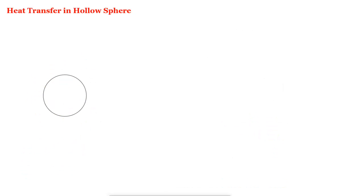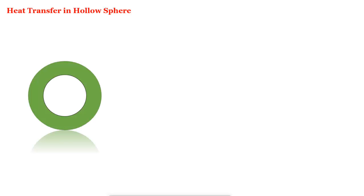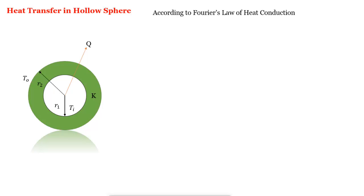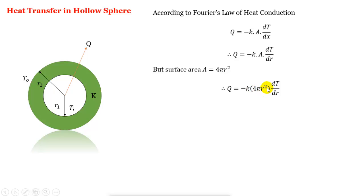Now we study heat transfer in the hollow sphere. The hollow sphere and hollow cylinder differ only in the area; all other derivation steps remain the same. Consider this is the hollow sphere having internal radius R1 at temperature Ti and outer radius R2 having temperature To. It has thermal conductivity K and Q is the heat transfer radially outward. According to Fourier's law, Q equal to minus K·A·dT/dx. Again we have radial flow, so dx becomes dr, giving Q equal to minus K·A·dT/dr. The surface area of the sphere is 4πr², so substituting gives Q equal to minus K·4πr²·dT/dr.